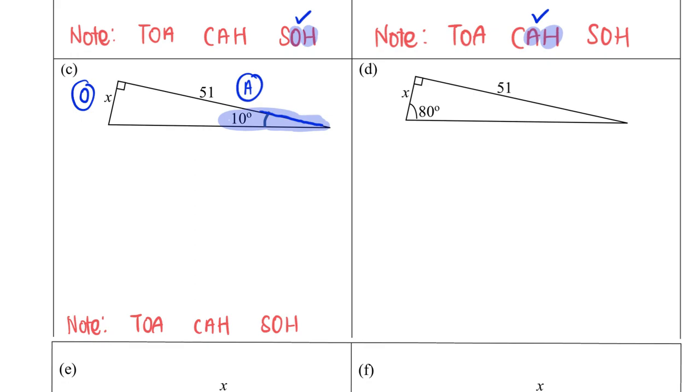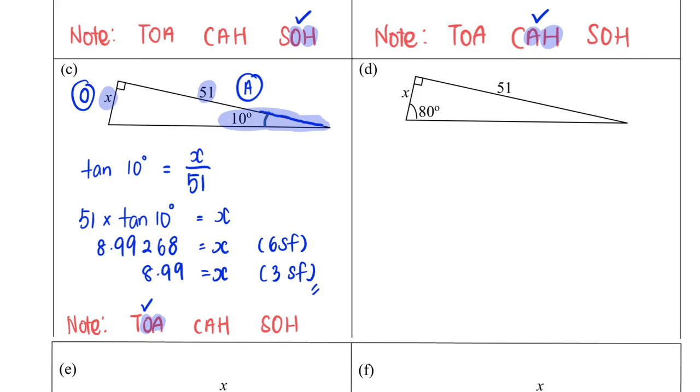This is the side that touches this angle, the adjacent side. X does not touch the angle, so it's my opposite side. With O and A, I am going to choose tangent. Tangent 10 degrees equals opposite, which is x, over adjacent, which is 51 cm. To solve for x, I'm going to multiply by 51 on both sides, and this will give me a value of 8.99268 to six significant figures, followed by 8.99 to 3 significant figures.